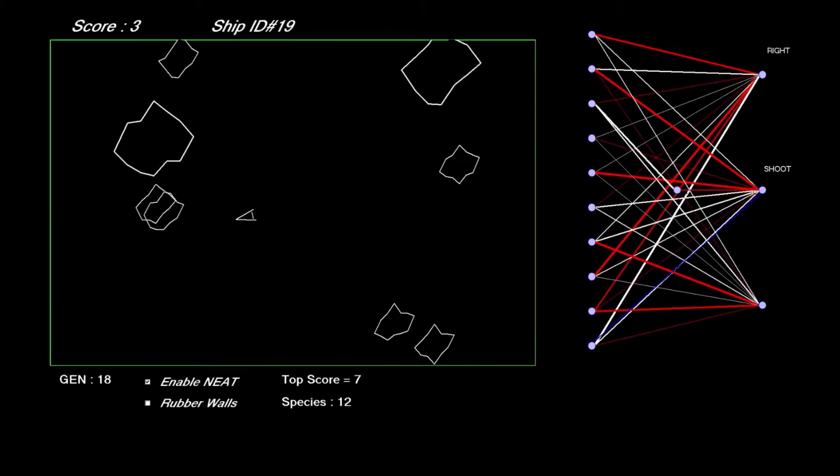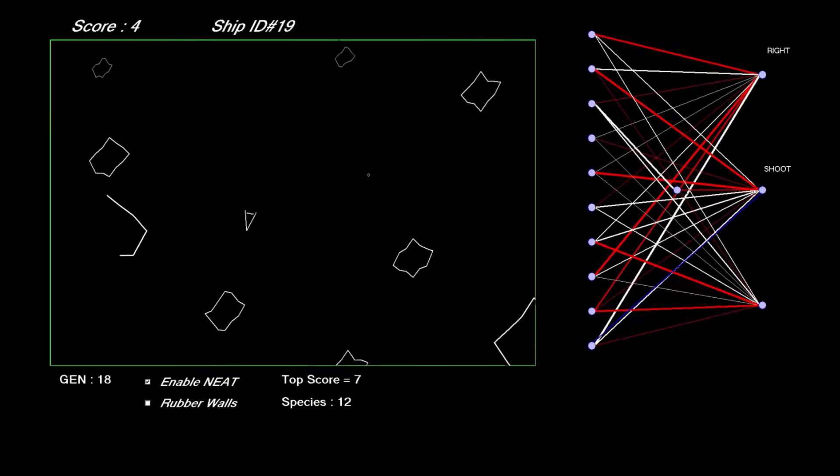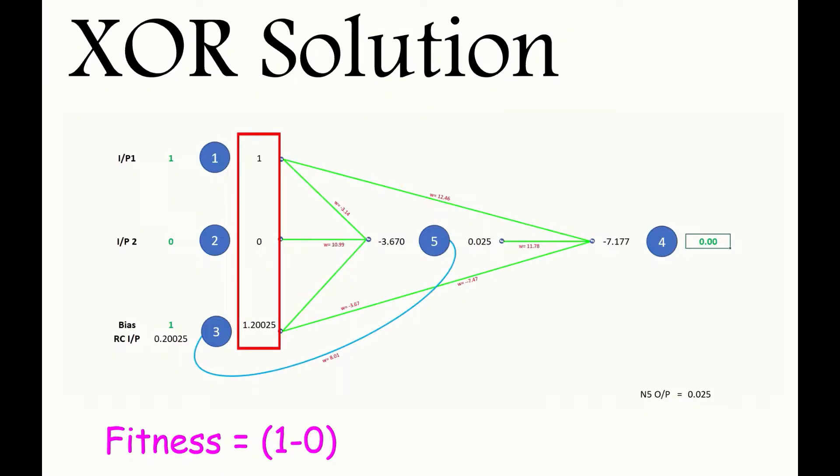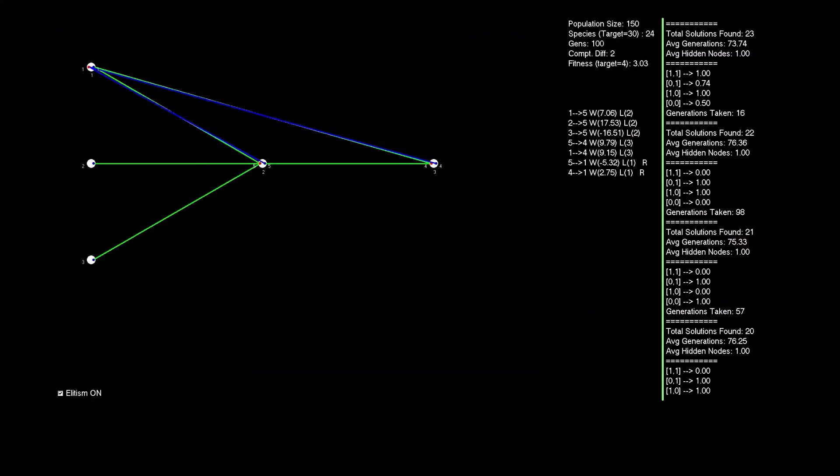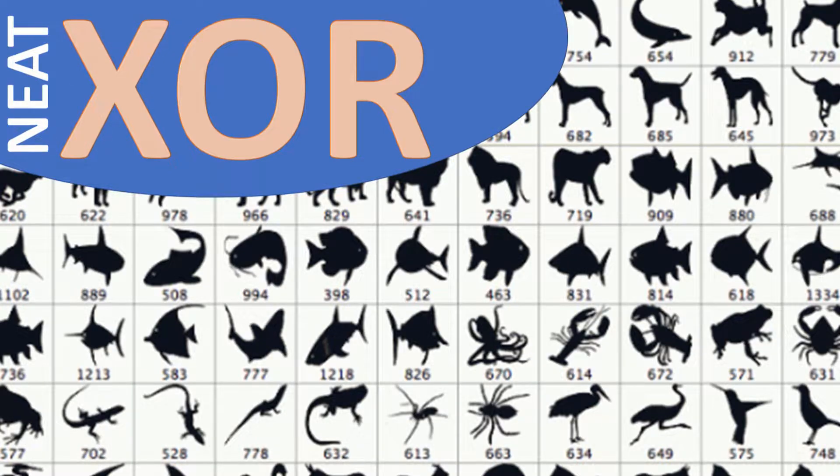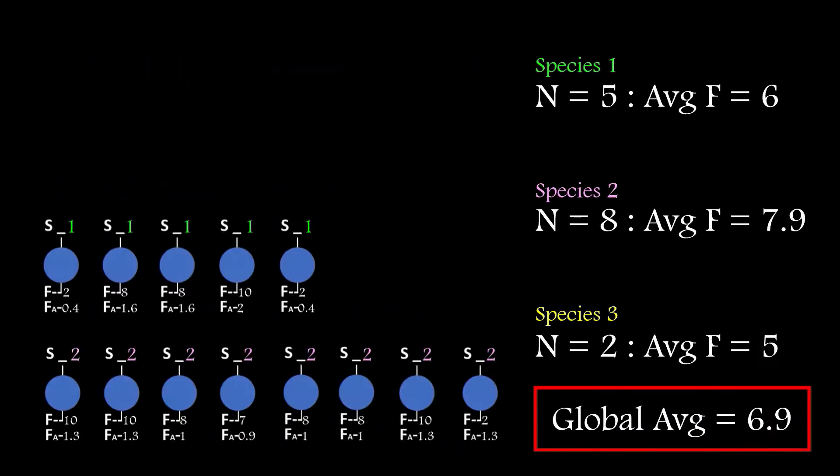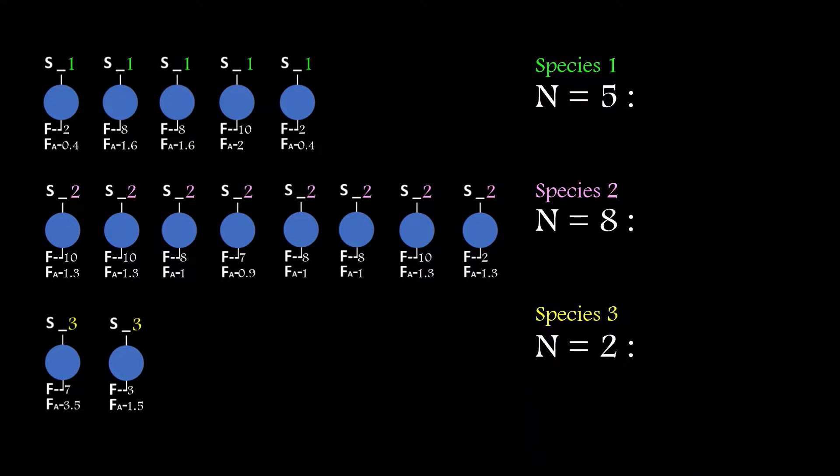From there I focused on recurrent connections and when they should be used and what effect they'd have on the end solution, and walked through an example of how the signal data would flow through a network with recurrent connections both disabled and enabled. And then it was on to the key points around speciation, how it works, what do the different elements of the equation mean, the impact of the scaling factors, and also how the number of offspring assigned to each species is determined.